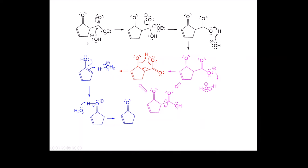To summarize: this is the saponification, followed by the decarboxylation, which involves a distinct acidic workup step, then the decarboxylation itself, then a tautomerization step. This is true for all acidic workup decarboxylations — they go through these three steps. For the final product's nomenclature: it's a ketone. The ketone dictates the number one position of the ring system, and there is an alkene at the two position, so the product is 2-cyclopentenone.